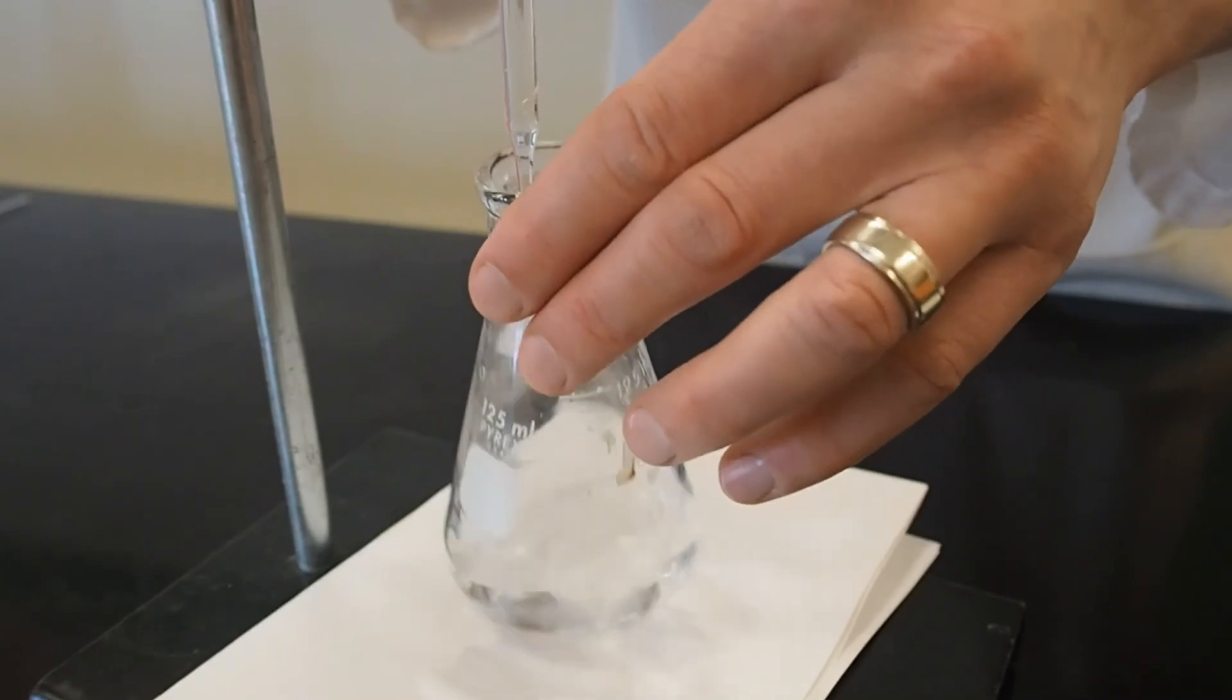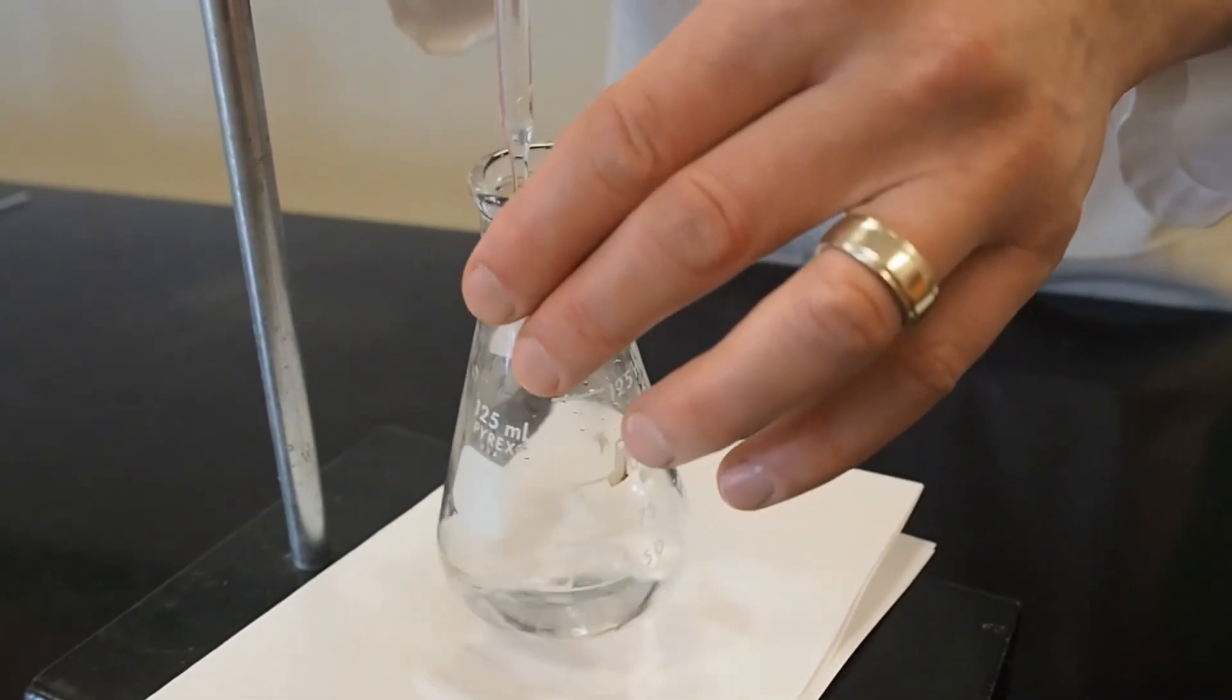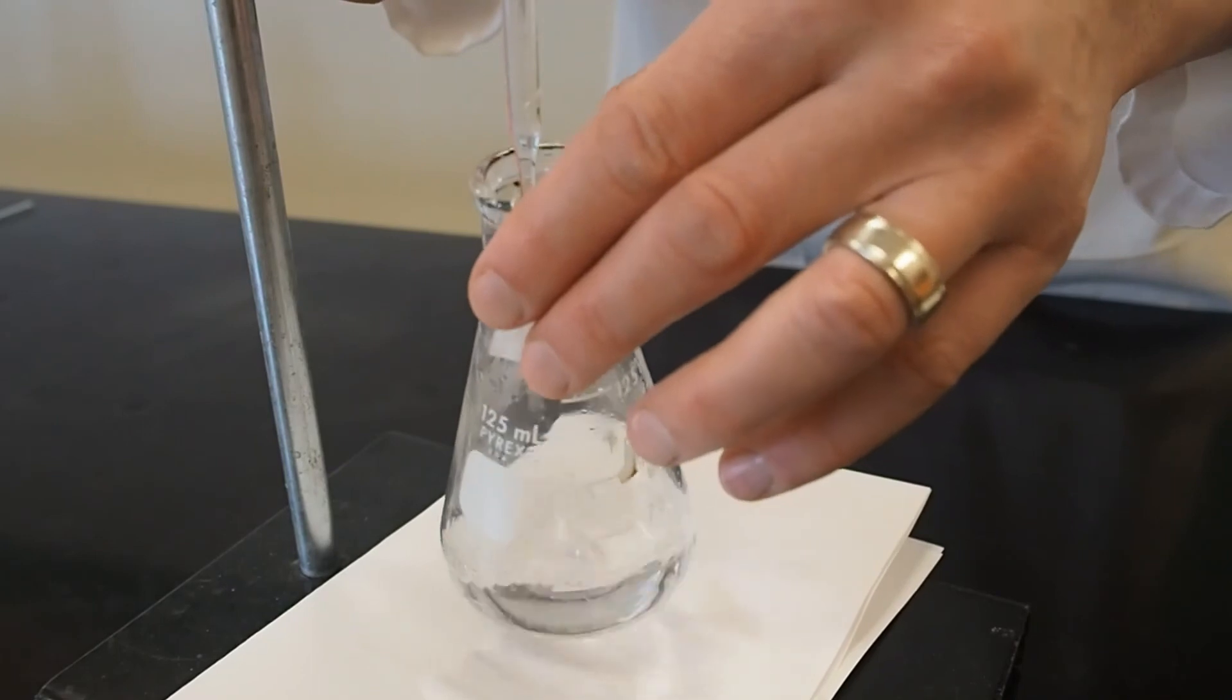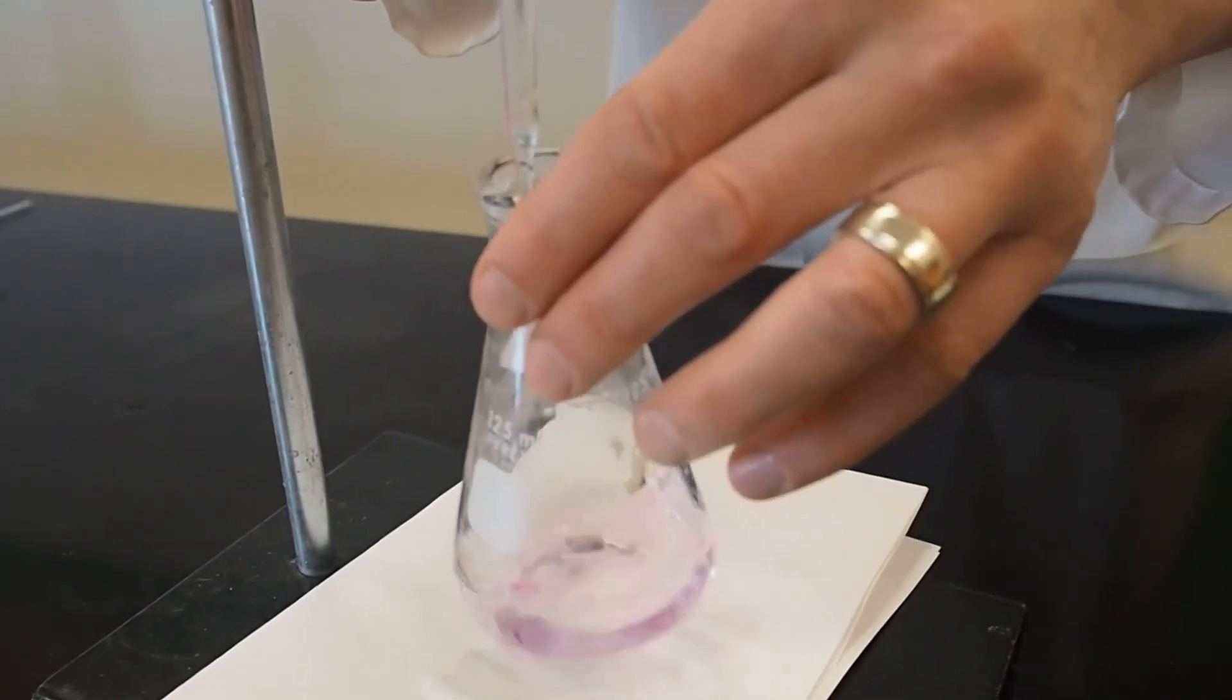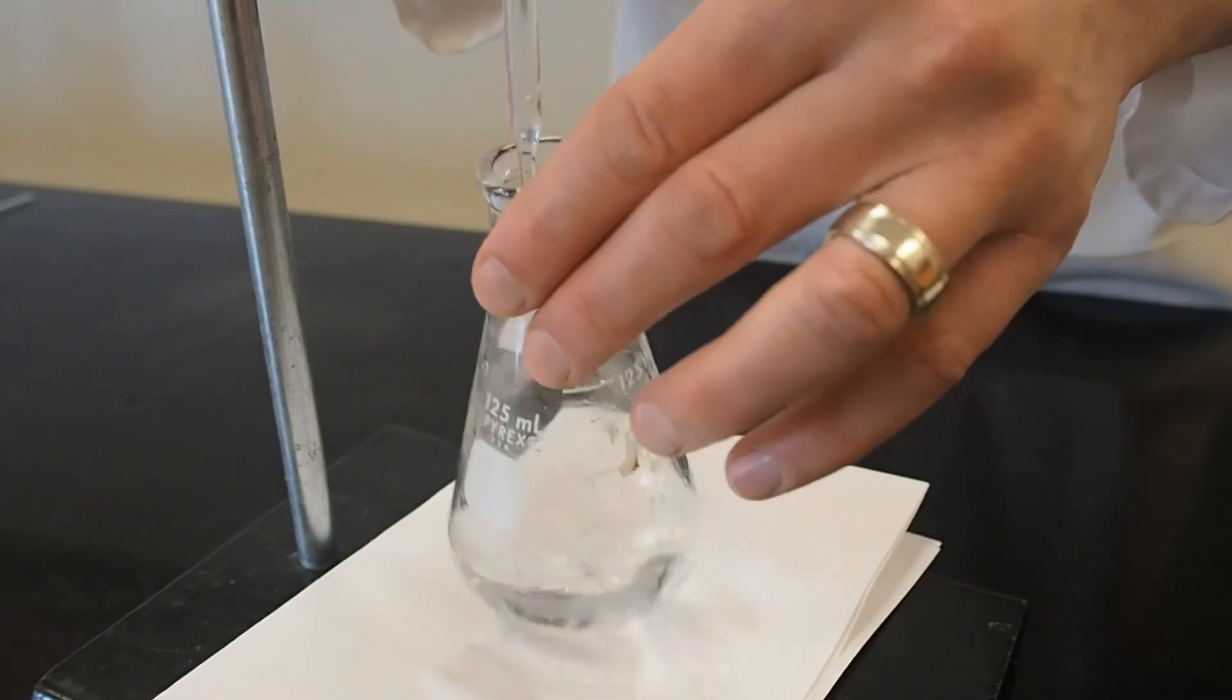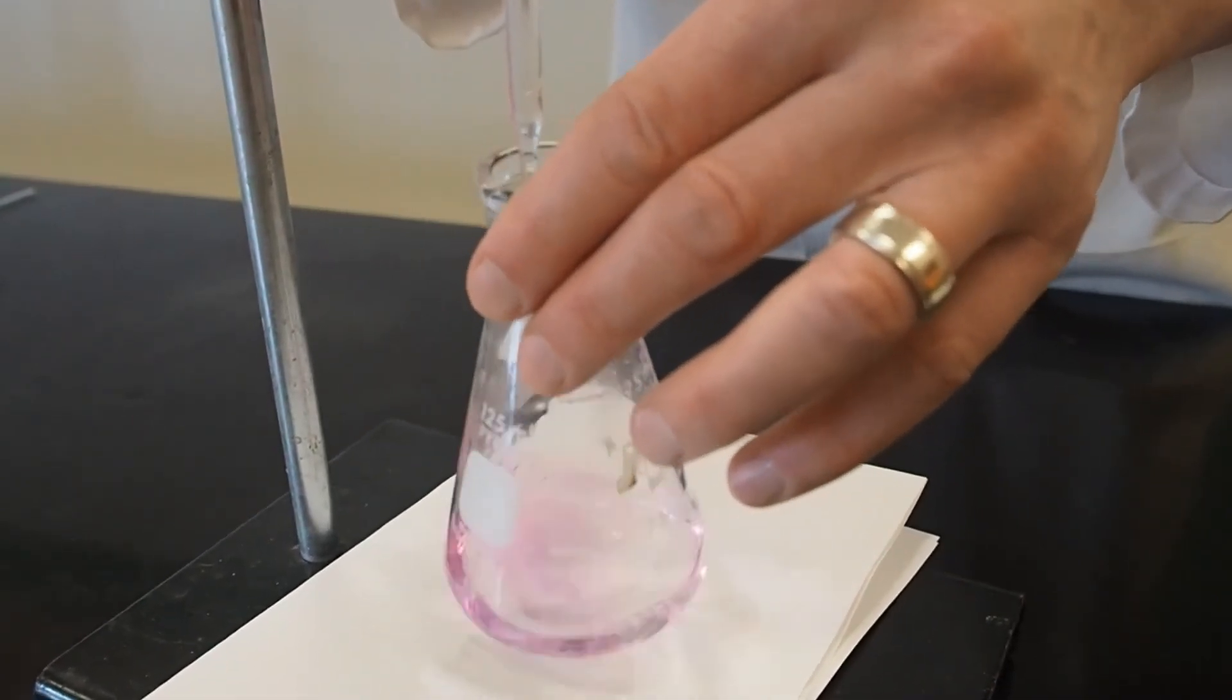Add the titrant drop by drop, swirling continuously. You will notice a color change. When you see this, stop the flow and swirl. If it is not permanent, continue to titrate. Stop at the first sign of a permanent color change. Record the final volume. Repeat the titration as required in the experiment.